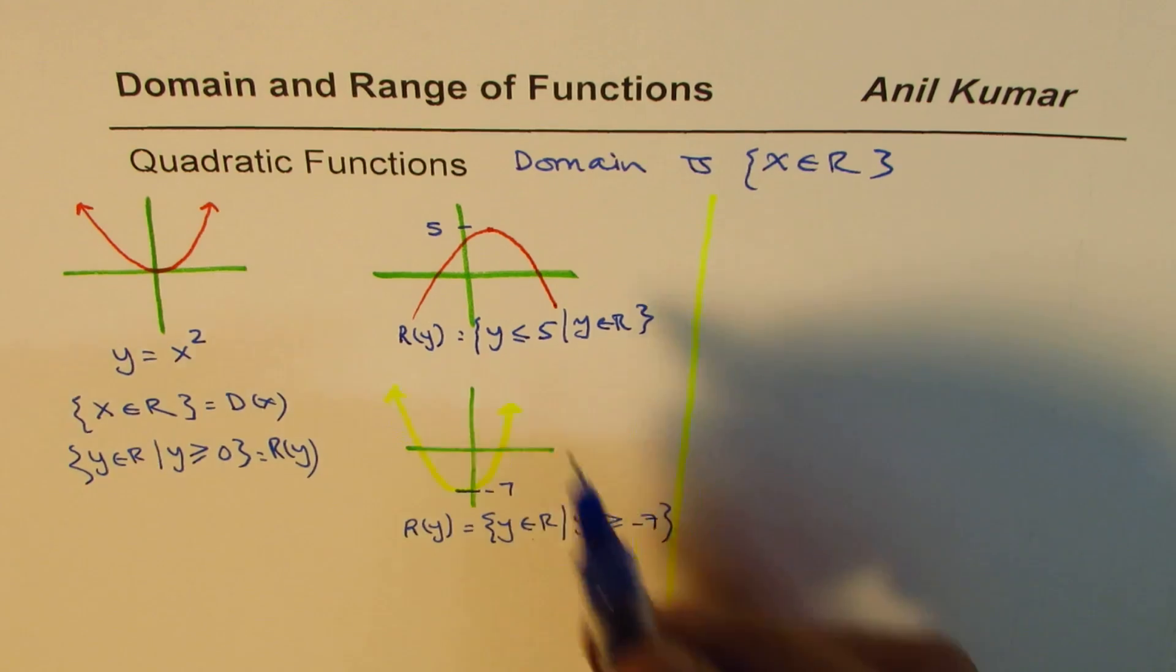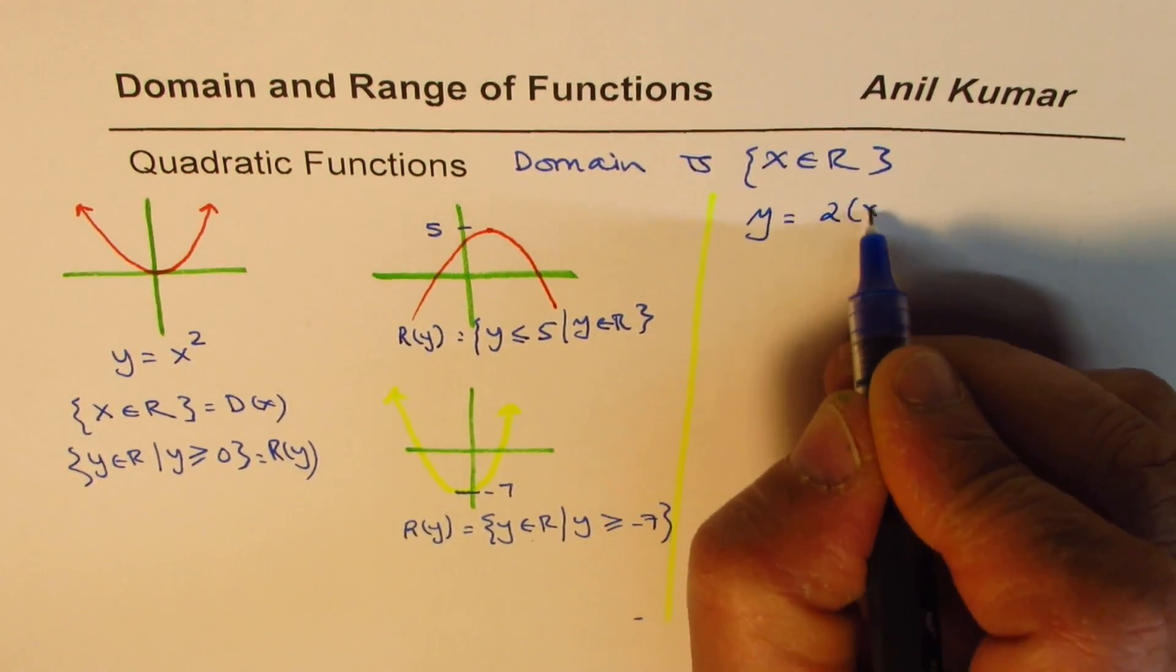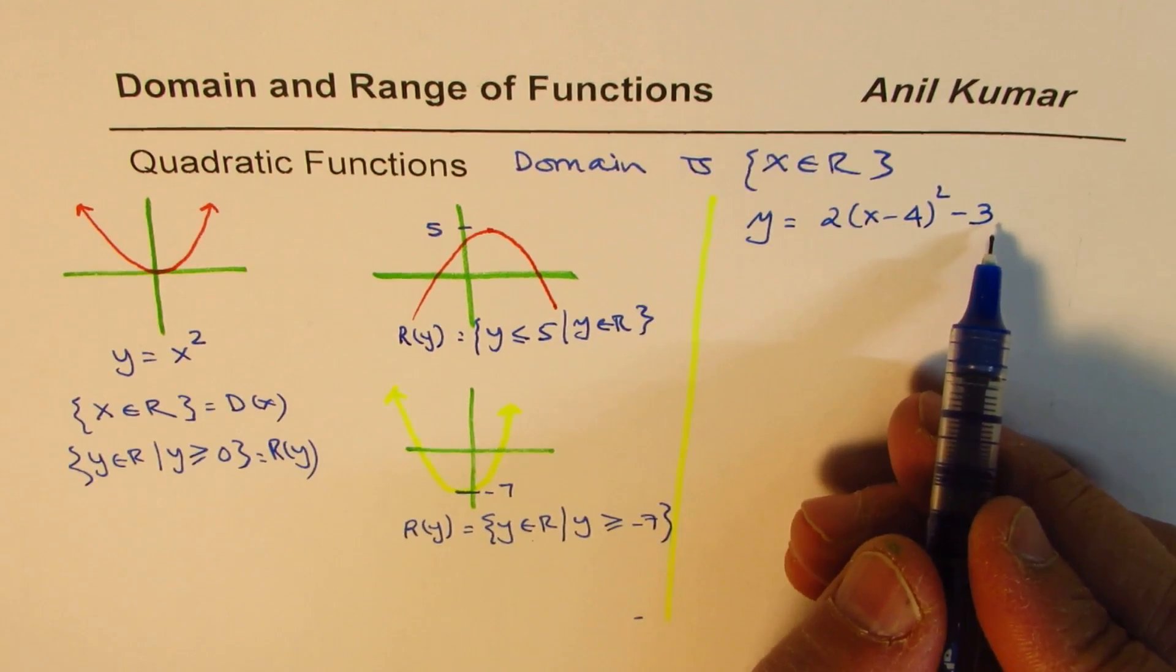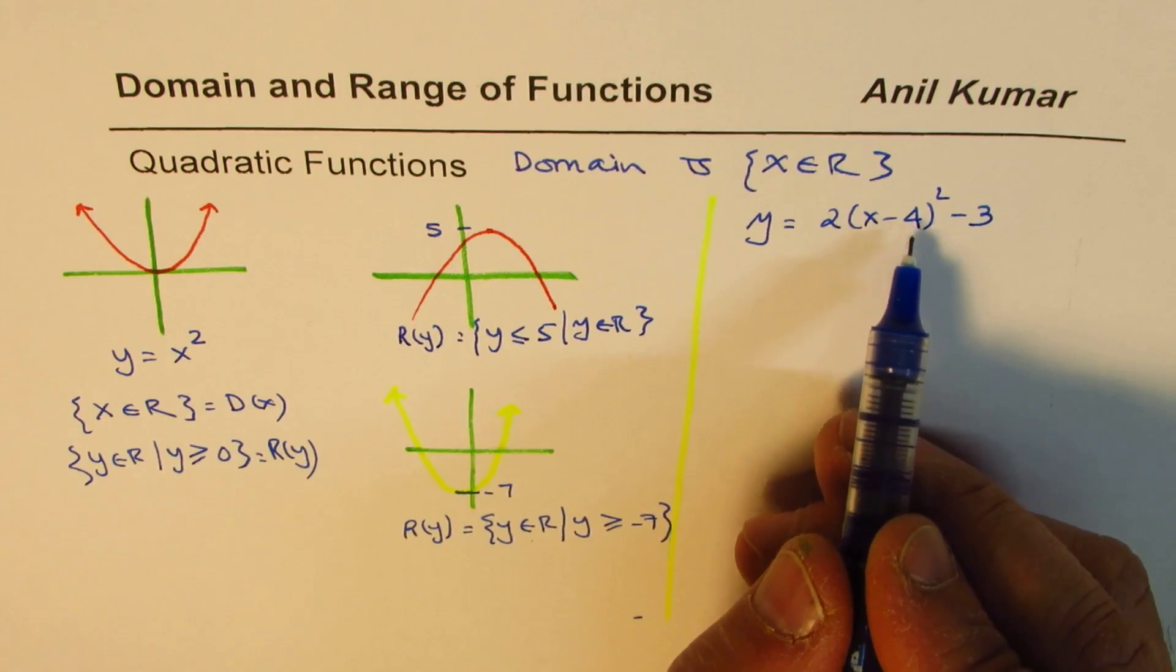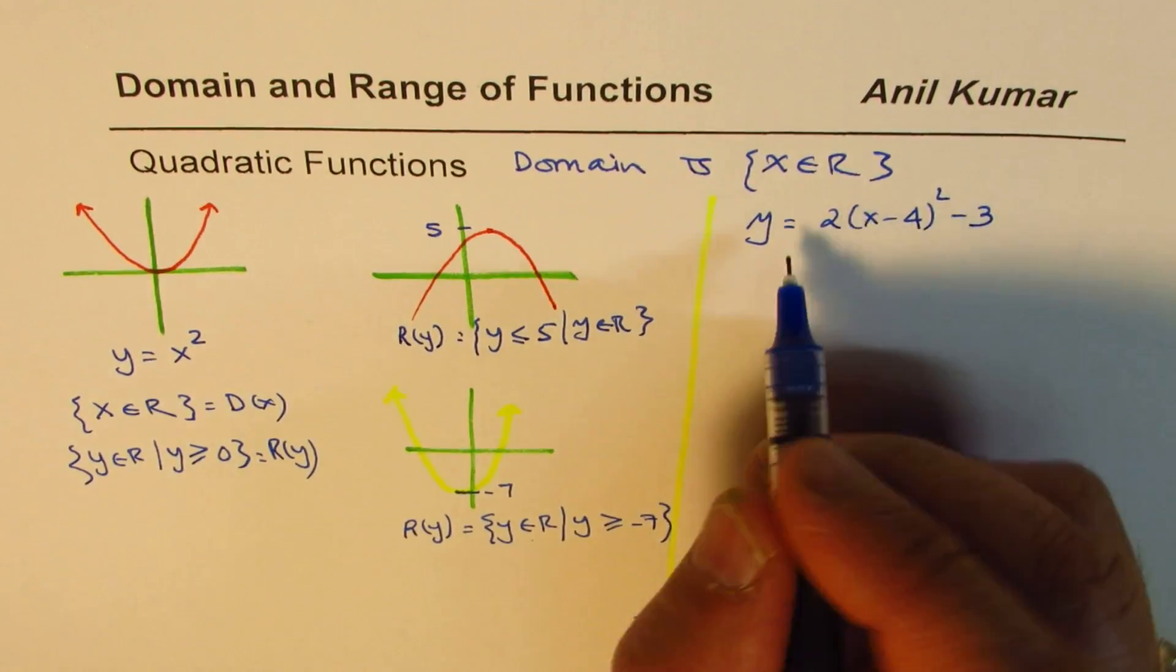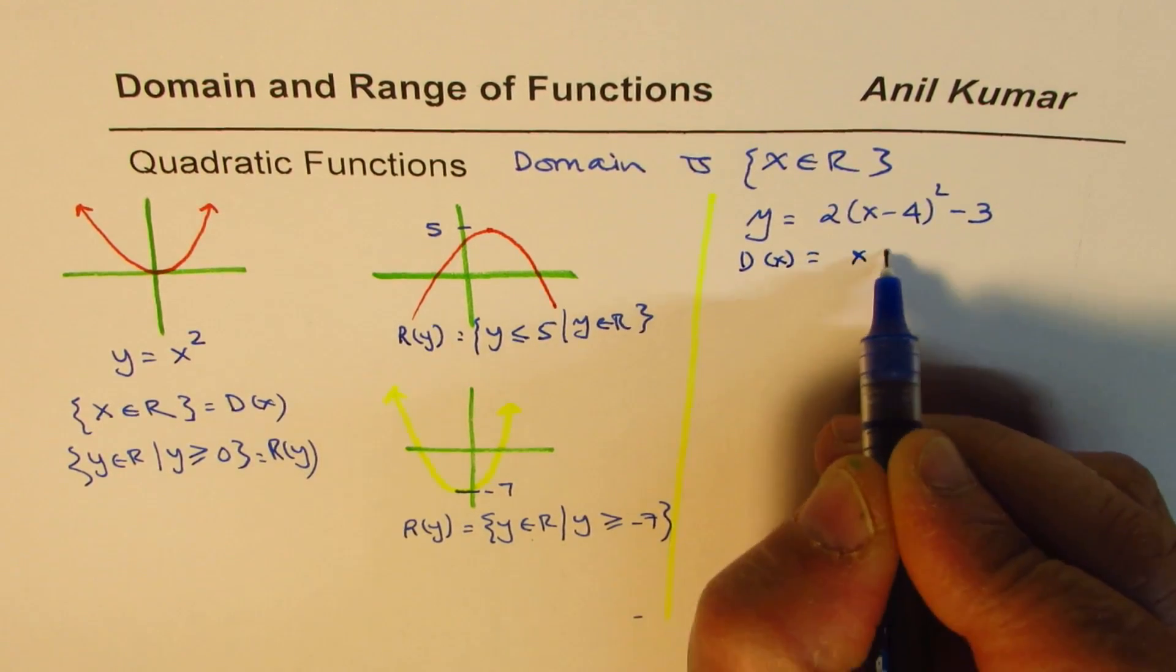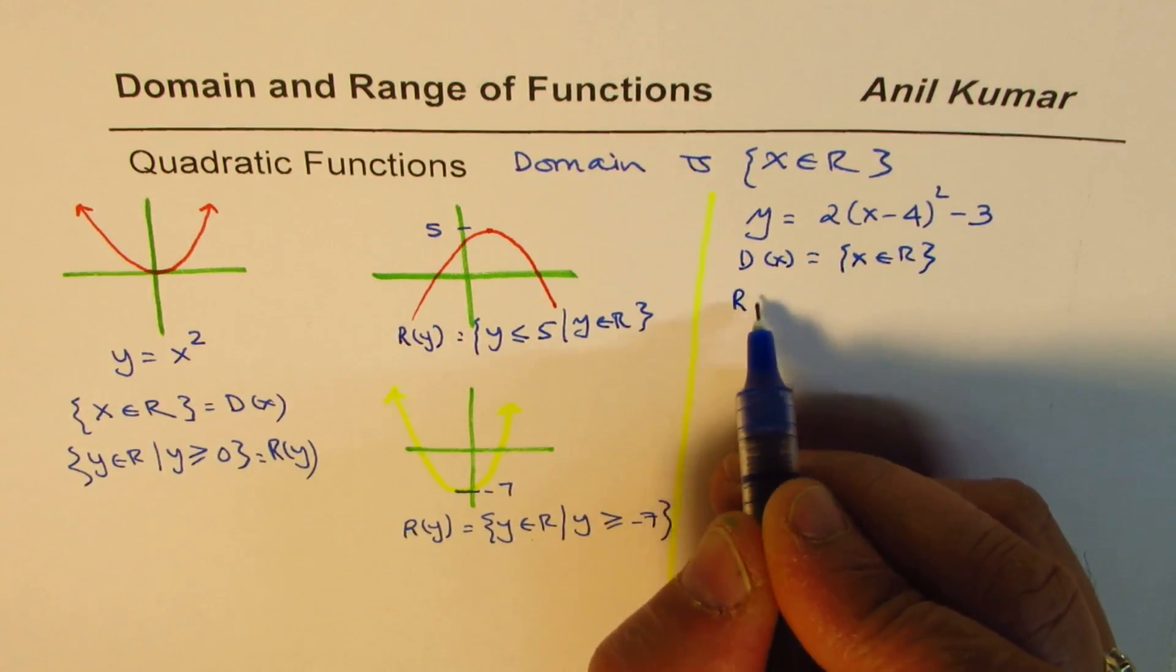We could have been given equation in this form, which is y equals 2(x minus 4) squared minus 3. That is the vertex form. So the vertex is at (4, minus 3). Well, we know domain for this function will be x belongs to real numbers. However, range will be what?